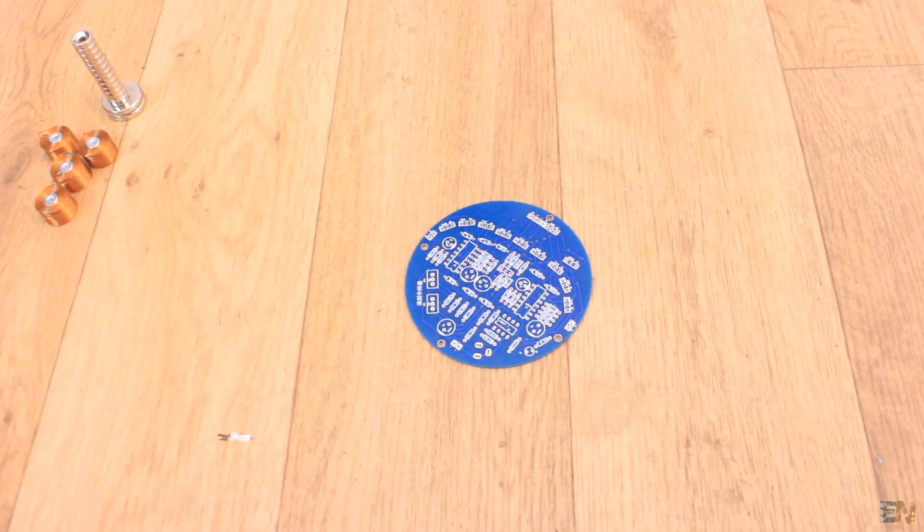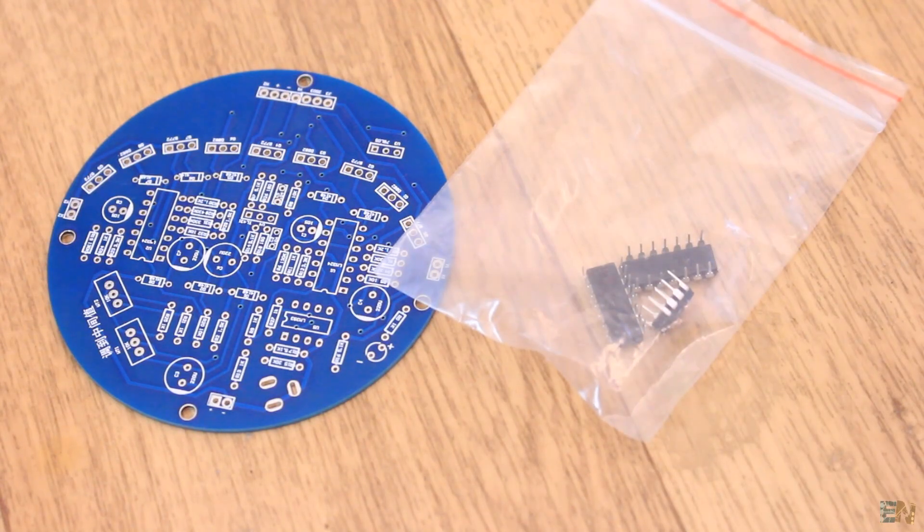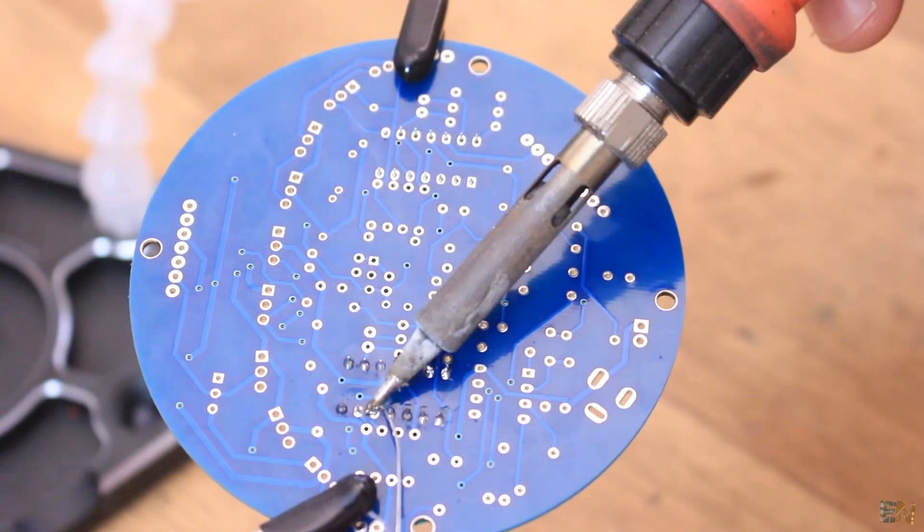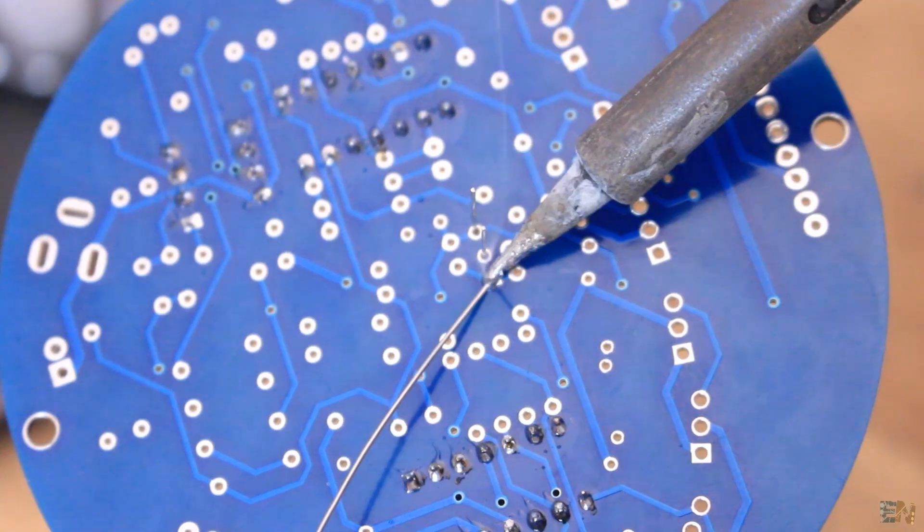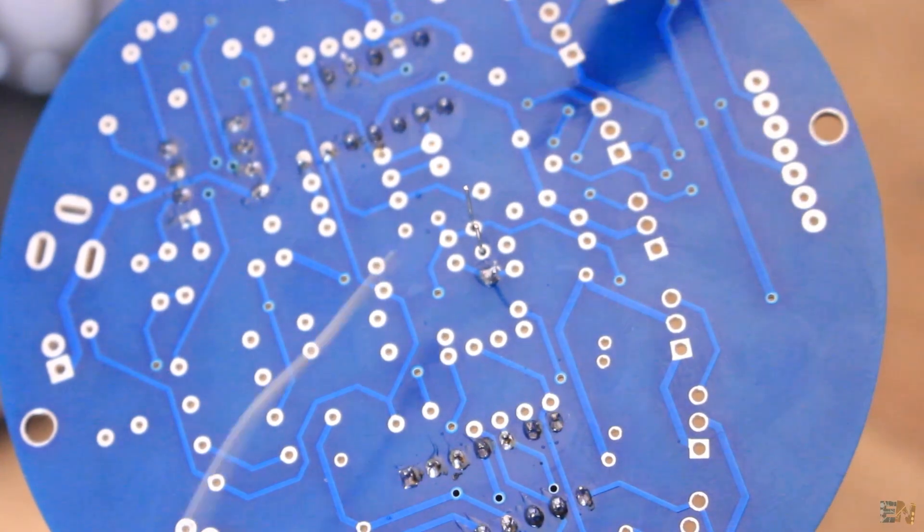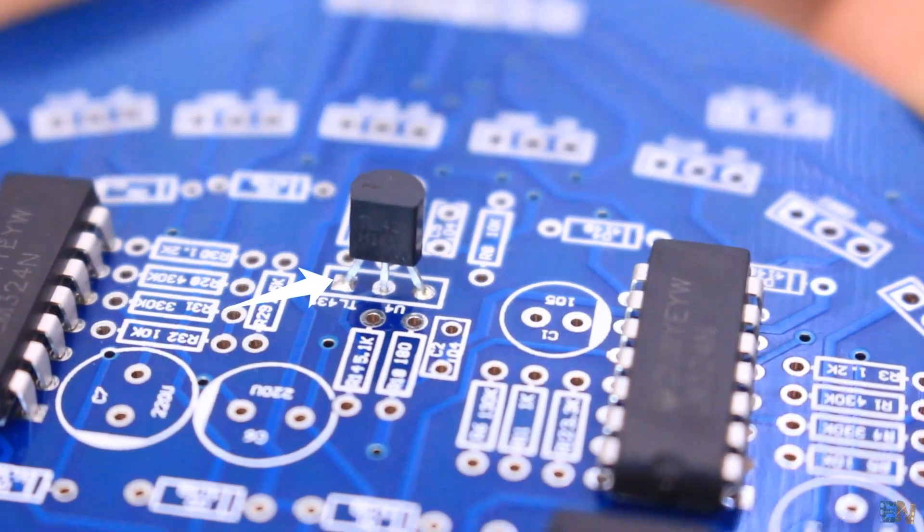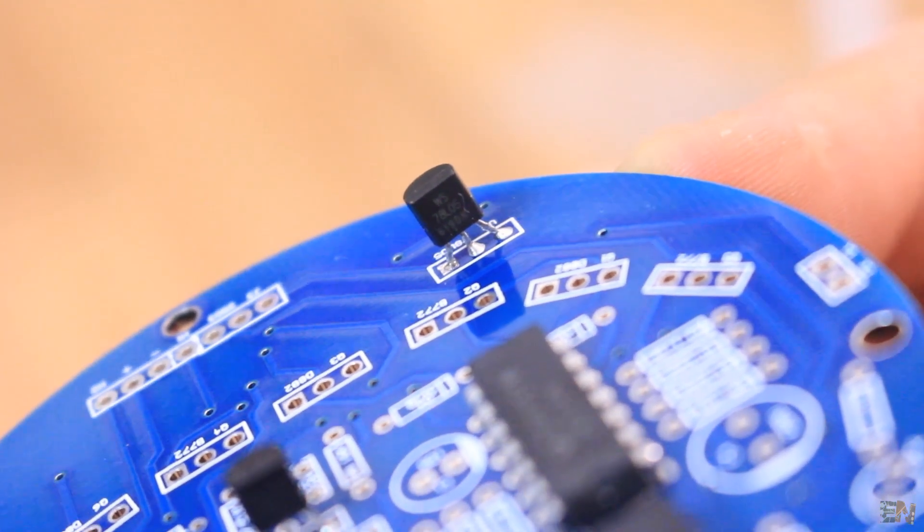I start by soldering this first board with all the components. I first solder the two LM324 amplifiers. Then I also solder the other smaller amplifier, the LM393. Now I solder the TL431 voltage reference here on these holes, knowing that this square pad is the first pin. Now I do the same for the 78L05 voltage regulator.